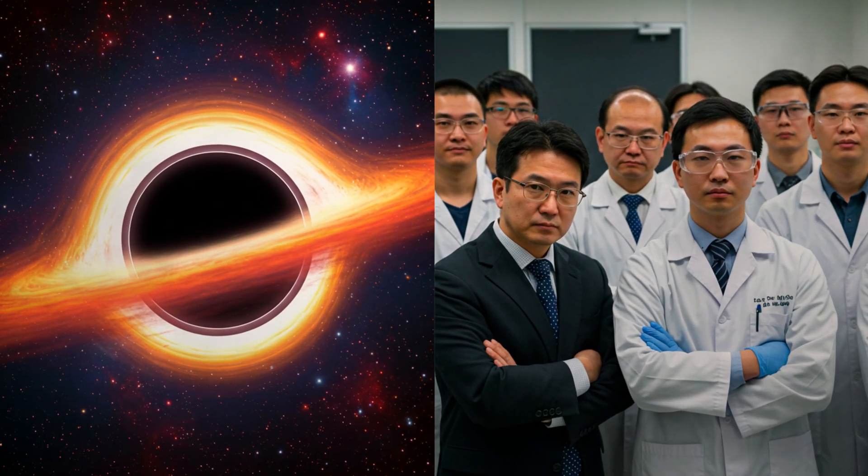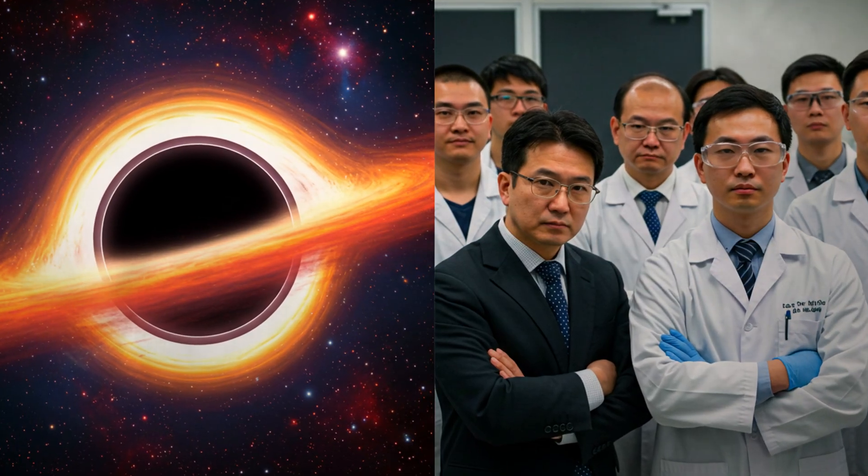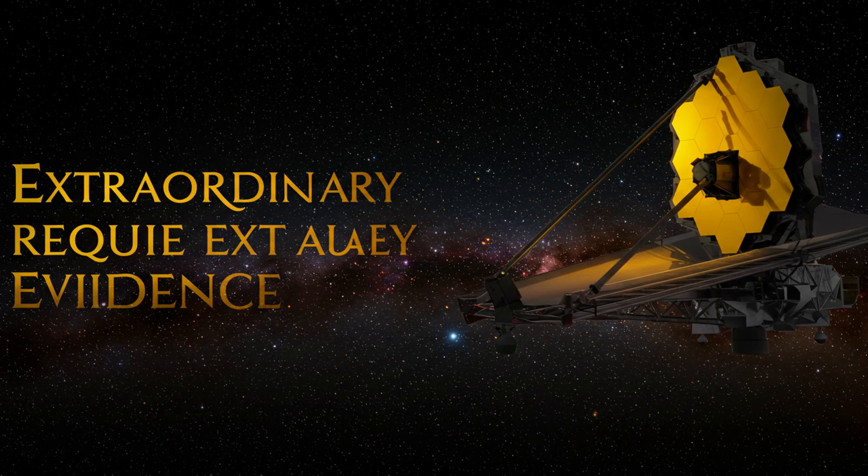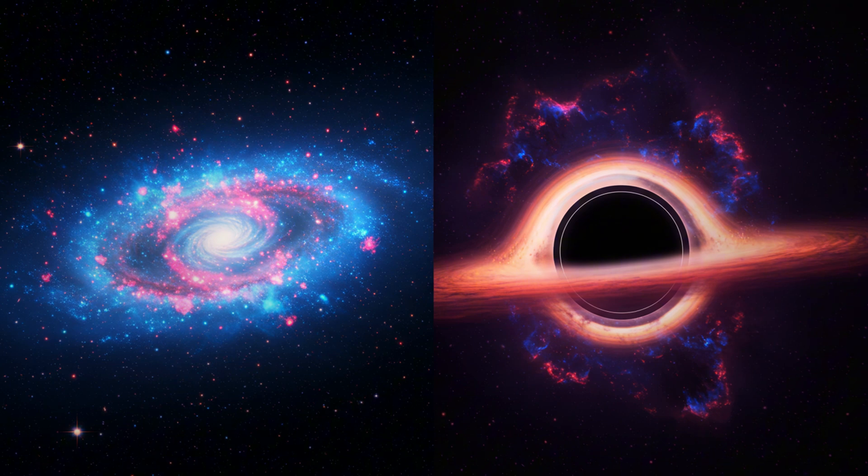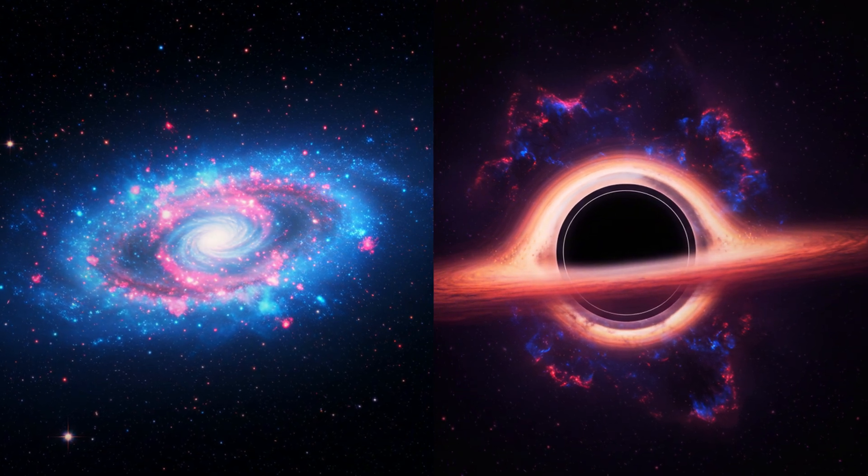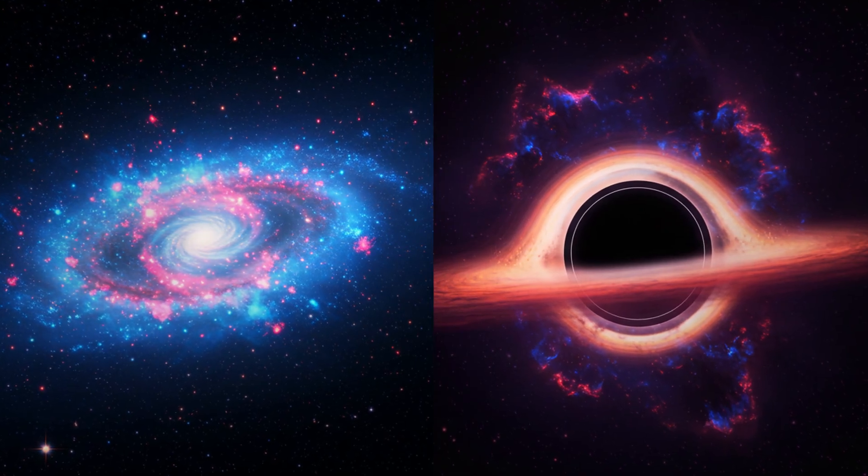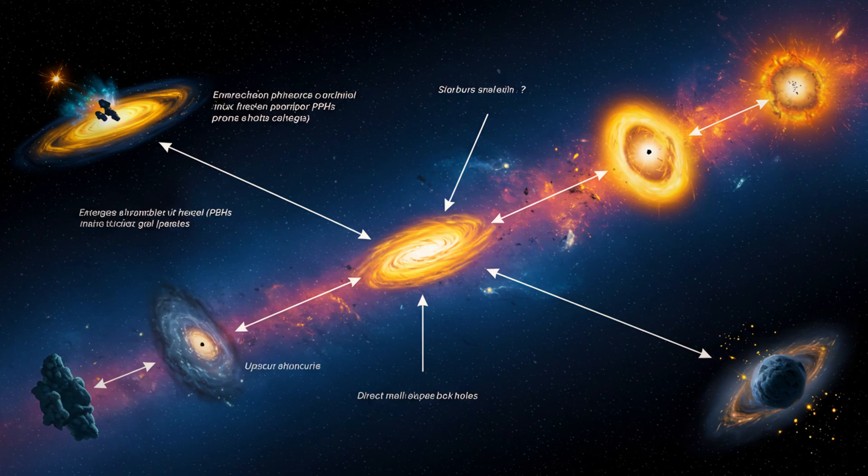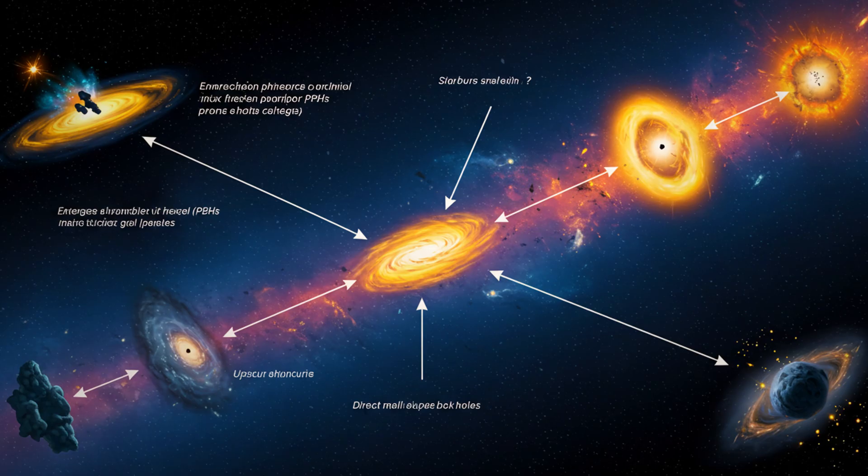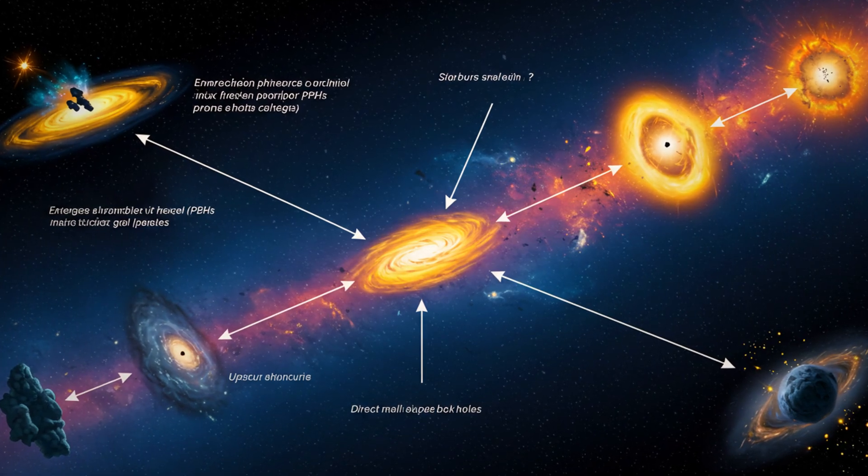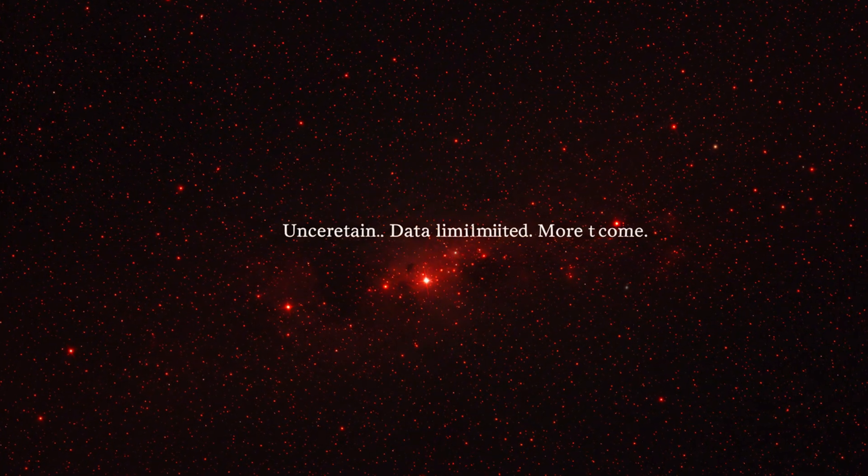Of course, not everyone is convinced. While the idea of primordial black holes is exciting, many scientists urge caution. Extraordinary claims require extraordinary evidence. The strange light sources Webb has seen could have other explanations. Perhaps they are simply young galaxies undergoing bursts of star formation. Or maybe they are direct collapse black holes, massive clouds of gas collapsing straight into black holes without ever becoming stars. Even the little red dots might turn out to be something more ordinary, once we gather better data.